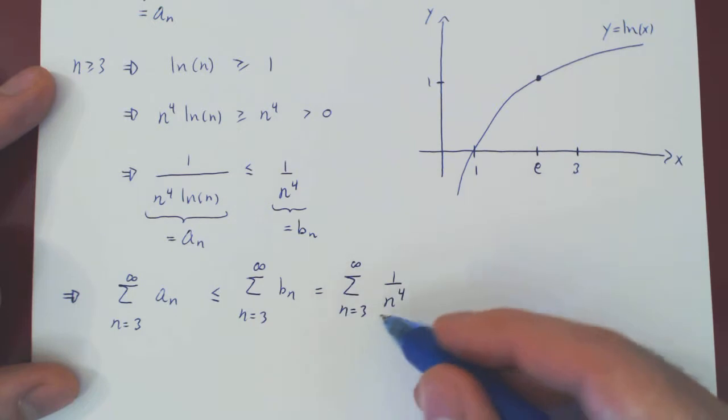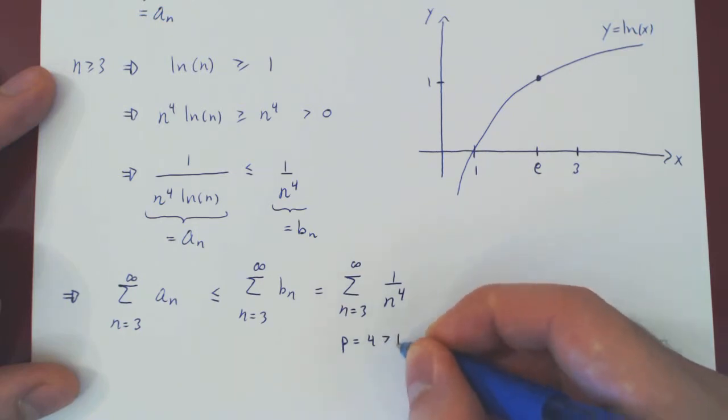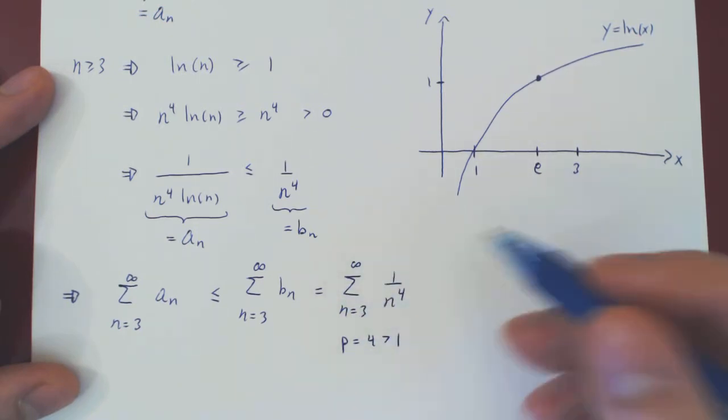And as we've just said, this is a simple p-series, where p equals 4. The key point is, 4 is strictly larger than 1, so this p-series converges.